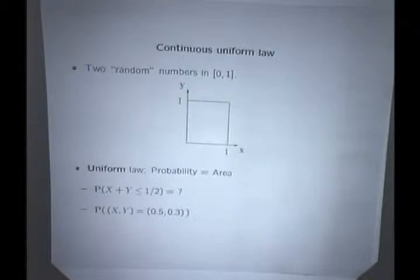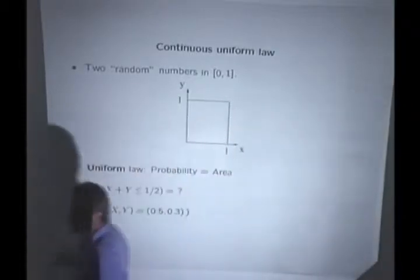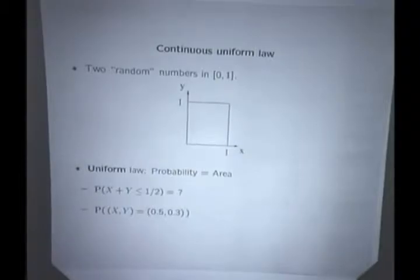Now the procedure we followed in the previous example is the same as the procedure you would follow in continuous probability problems. So going back to our Dart problem, we get a random point inside this square. That's our sample space.